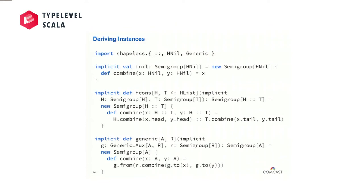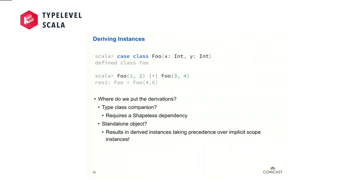The idea is that we're going to define the way these instances work as a set of inductive rules, and encode those inductive rules using implicits. The question is where these go. We could put them in the type class companion — if we do that, we have a Shapeless dependency, and for some projects this works great. S-Codec has Shapeless throughout its public API. But for some projects this doesn't work. Miles mentioned he just released Shapeless 2.3, and I have not released S-Codec core on Shapeless 2.3 yet, so that type of lockstep dependency on binary compatibility becomes a problem.